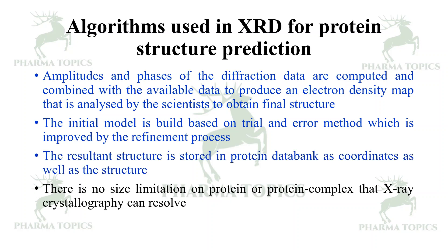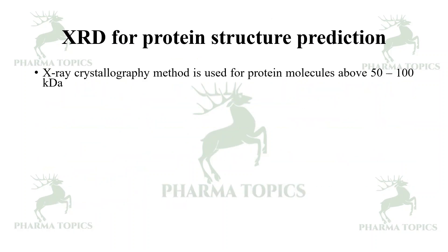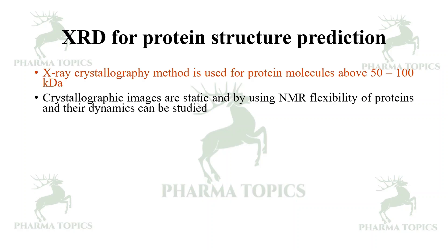There is no size limitation on protein or protein complex that X-ray crystallography can resolve. In the case of NMR, proteins with less than 100 kilodaltons could be predicted, but beyond that it could not. In contrast, with XRD larger protein structures can be resolved. X-ray crystallography is used for protein molecules above 50 to 100 kilodaltons. Crystallographic images are static, whereas NMR can be used to study flexibility and dynamics of proteins.